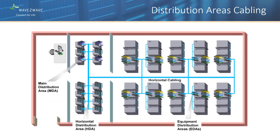The MDA is cabled to the HDA in each data hall or pod. The HDA, also known as the aggregation point, fans out to each EDA for direct server or storage connectivity. The HDA is typically the end-of-row or middle-of-row network equipment rack, while the EDA is typically the top-of-rack patch panel or top-of-rack networking device.